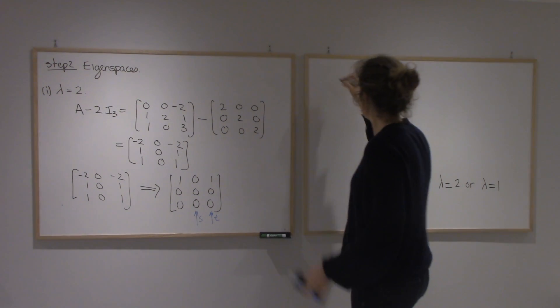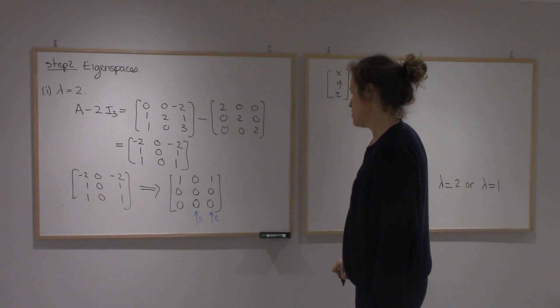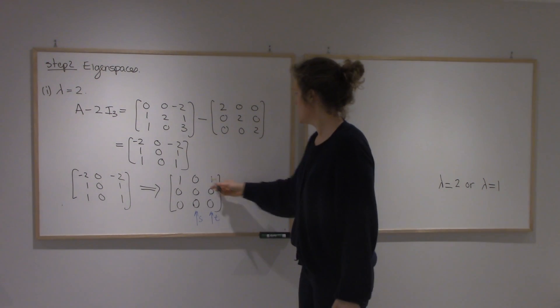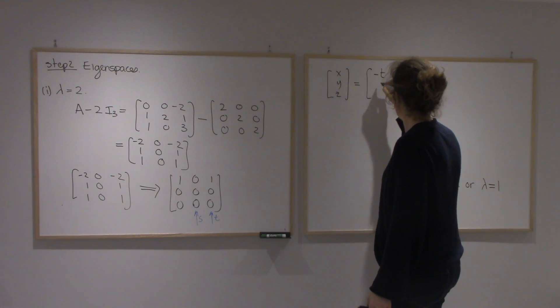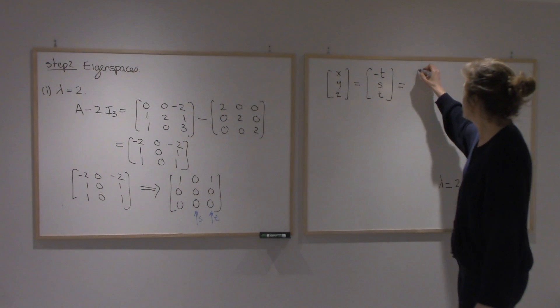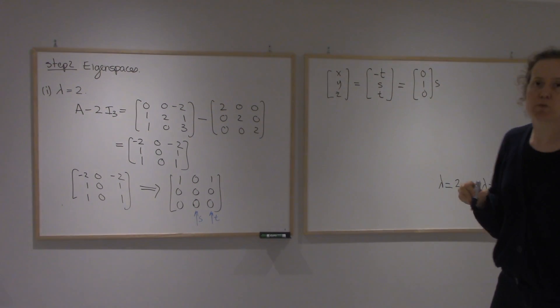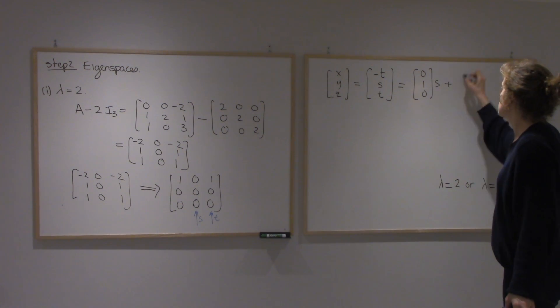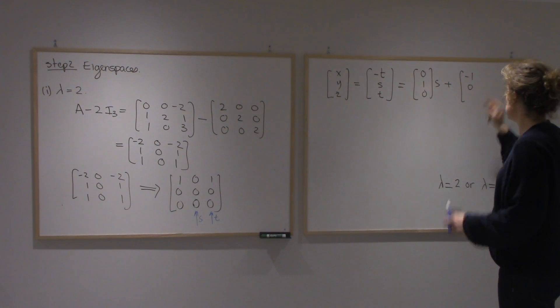Alright, so x, y, z. So x is minus T from the first equation. Y is S and z is T. Now I'm going to split it into the parts which have S, and the part which has a T in it.